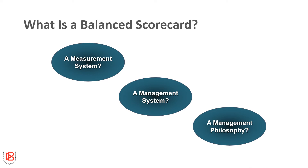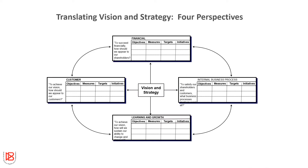The Balanced Scorecard is an amalgamation of a measurement system and management philosophy through which we manage a particular system. The four perspectives are: internal business process — how do we operate; learning and growth — how to be a learning and growth-oriented organization; customer — we need a loyal customer base; and the financial perspective — money is the fulcrum through which every organization works.